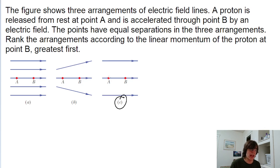The problem is asking us to rank the linear momentum of the proton after it's been released from point A and sent through to point B. We can see that diagram A has the biggest density, as we've discussed earlier. So A will have the greatest effects on the linear momentum of the proton.